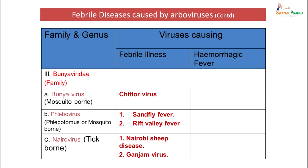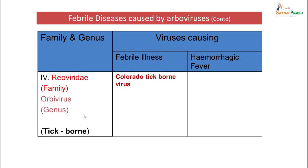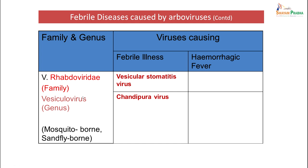Bunyaviridae family: Bunyavirus (mosquito-borne) produces Chetor virus, a febrile illness. Phlebovirus (mosquito-borne) produces sandfly fever or Rift Valley fever. Nairovirus (tick-borne) produces Nairo sheep disease or Ganjam virus. Reoviridae family, Orbivirus genus (tick-borne) produces Colorado tick fever, a febrile illness. Rhabdoviridae family, vesiculovirus genus (mosquito and sandfly-borne) produces vesicular stomatitis virus or Chandipura virus, both febrile illnesses.